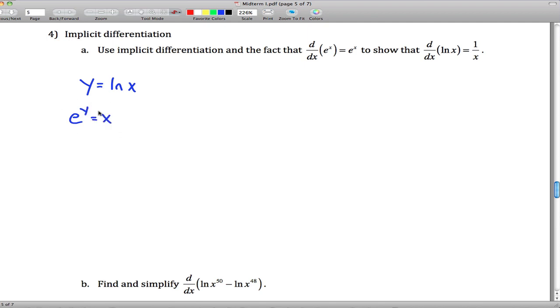And then when we have it written in this form, we use implicit differentiation to take the derivative of both sides. Over here we've got the chain rule. The outside function is e to the x, the inside function is y, so the derivative is e to the y times y prime. On the left we've got the derivative of x is just 1.